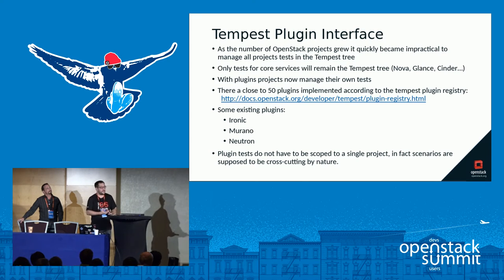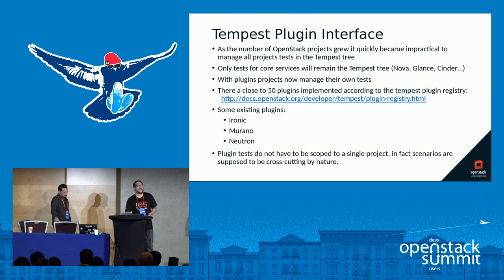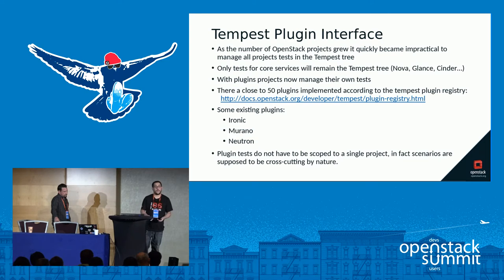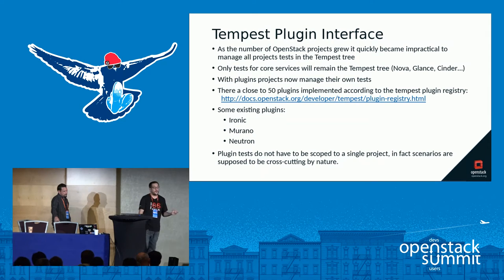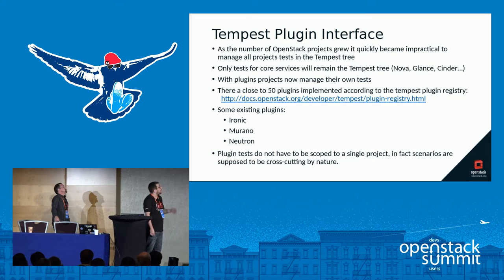As Tempest started to grow huge — running for all the different projects and all the different gates — we decided to implement a plugin interface that would allow tests to go back to their own projects so people could review them with knowledge. There are about 50 plugins now. We decided to keep only the core projects — mainly Nova — though there are also plugins for Cinder and Glance. When we release a Tempest stack, it's tied to the global requirements, which are the requirements released by DevStack and the OpenStack release team at each actual release.